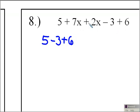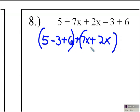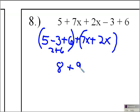And then I'm going to group my x's together. So it's going to be plus 7x, because there's a plus sign in front of the 7, and then plus 2x. I'm going to use the associative property of grouping and group my like terms together. Going back to solve: 5 minus 3 is 2, and 2 plus 6 is 8. Then 7x plus 2x is going to be 9x.